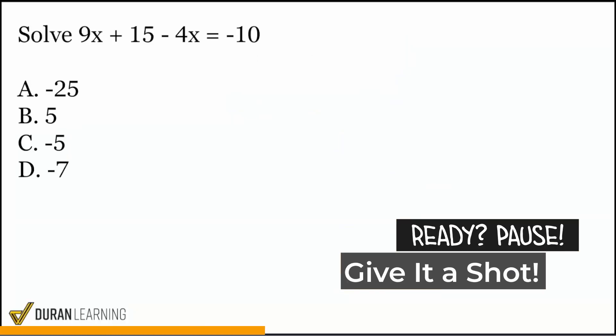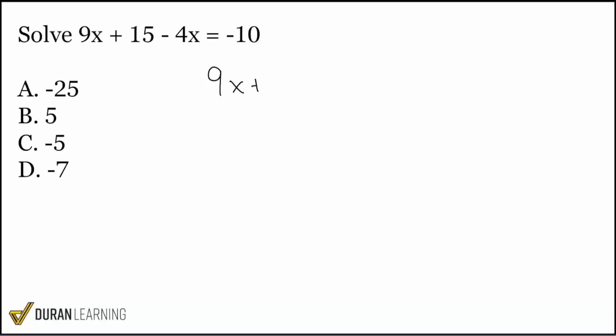Let's handle this next question: solve 9x + 15 - 4x = -10. When we're handling this one, the biggest thing is making sure you write it down the right way because that negative 4x is on the same side as the equal sign. If you accidentally began by adding 4x to both sides thinking that would affect it, no, that's not the right way to go.